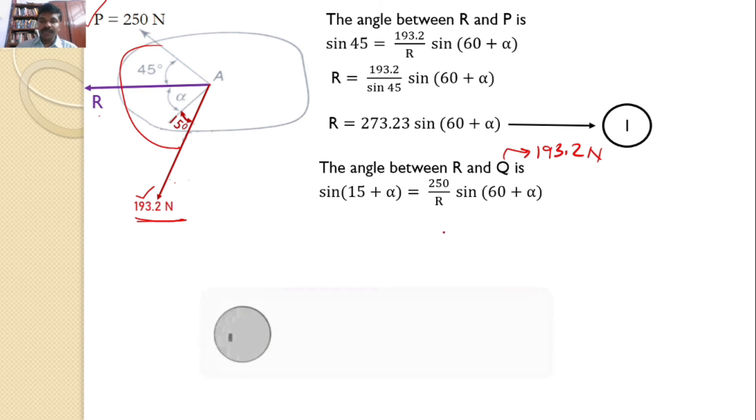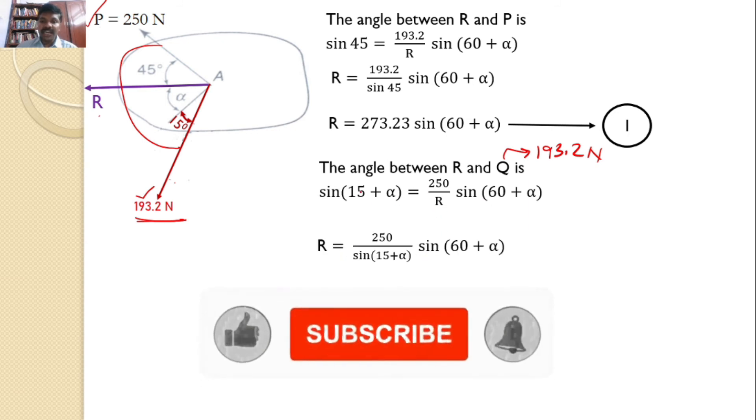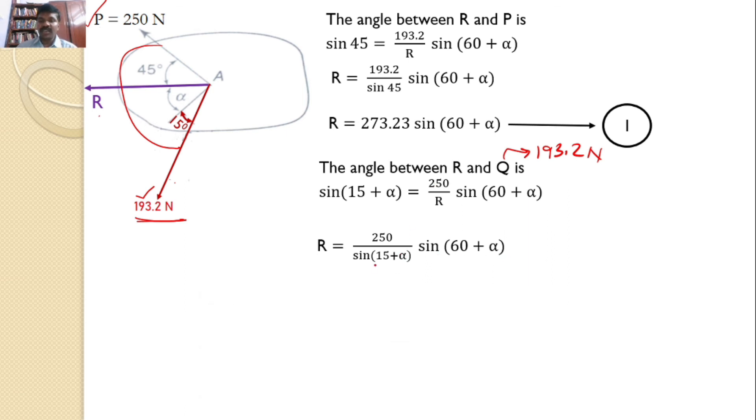So, this I can simplify and I can write that R equals 250 by sin 15 plus alpha into sin 60 plus alpha. So, this is my equation 2.